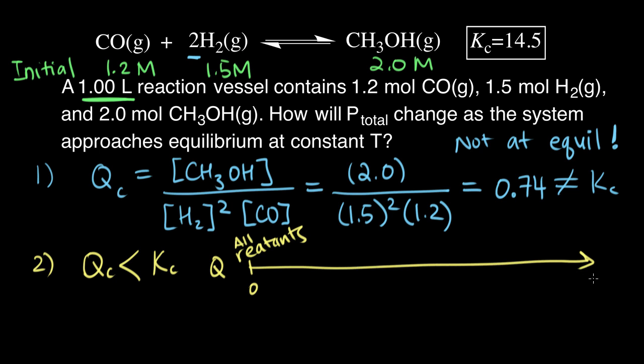So if we look at all possible values of Q, we know that when Q is 0, we have all reactants. When Q is infinitely large, we have all products. And then we have all of the possible values in between.